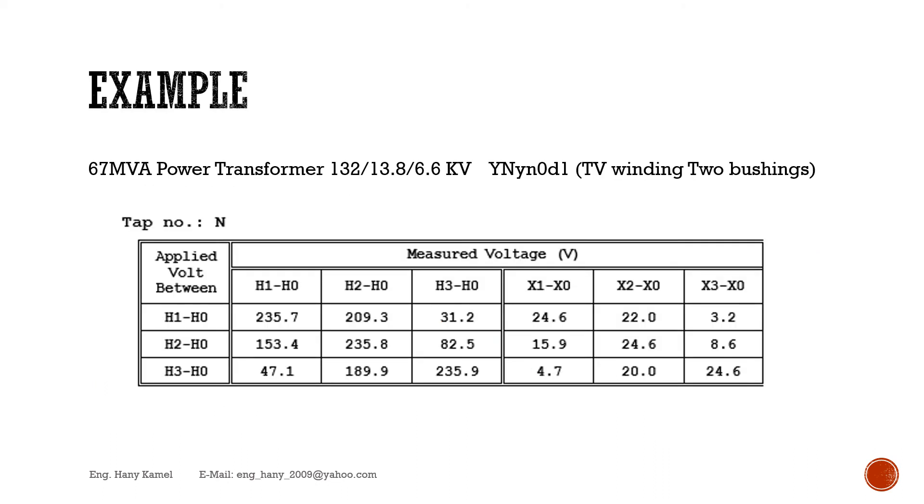On-site measurement example for 67 MVA power transformer, 132 over 13.8 over 6.6 KV. Vector group YN YN0 D1. Tertiary winding with 2 bushings from 1 delta corner.